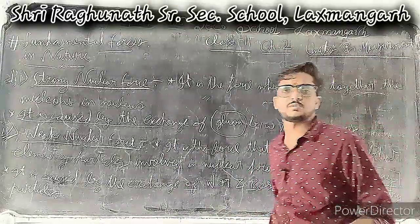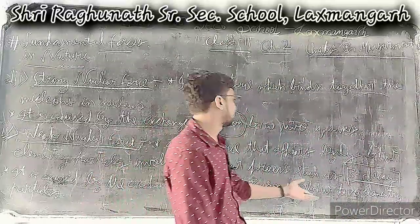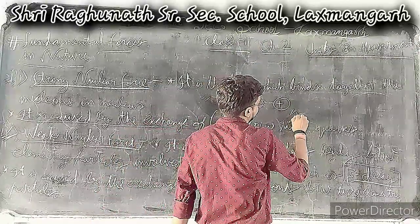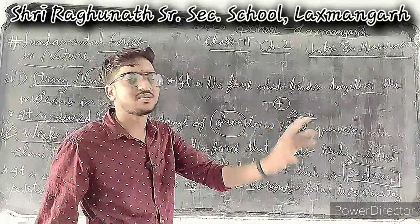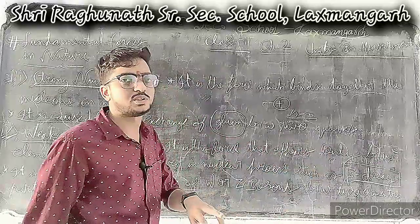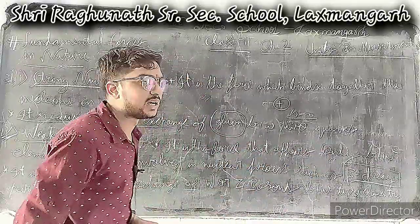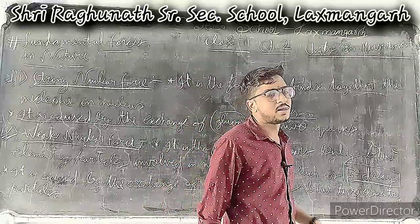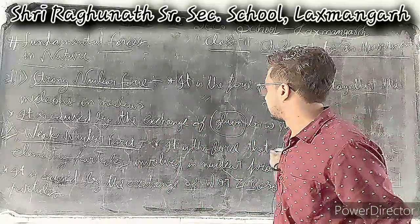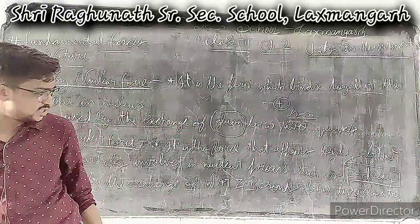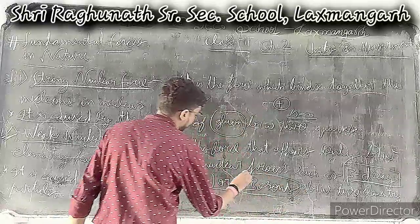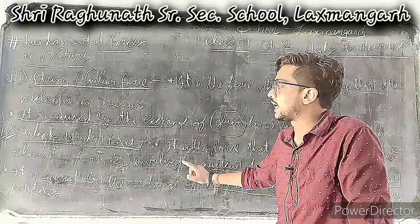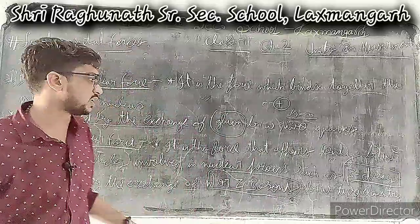I will explain beta decay in the next lecture or when it comes in your 12th class syllabus. In beta decay, a neutron is converted into a proton with electron emission. The carrier particles of the weak nuclear force are the W and Z bosons. Because of these boson particles, they carry this force, which is responsible for processes like nuclear fission.